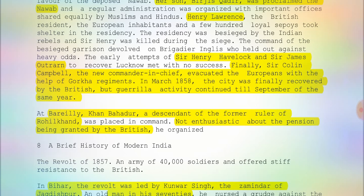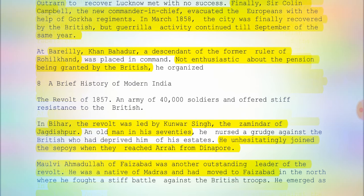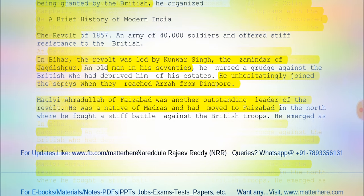In Bihar, it was Kunwar Singh, the zamindar of Jagdishpur — an old man in his 70s — who nursed a grudge against the British who had deprived him of his estates. He unhesitatingly joined the sepoys when they reached Arrah from Dinapur. Then there was Maulvi Ahmadullah of Faizabad, another outstanding leader of the revolt. He was a native of Madras in south India who had moved to Faizabad in north India.